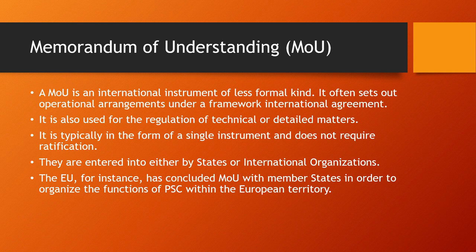The Paris MOU led to the formation of port state control within European territory. What that means is that some countries get together and agree that they don't need to inspect the ship in every European port. One country can inspect the ship and then pass on the findings to the rest of the MOU members. Resources and workload are shared. If a ship performs poorly in one port and sails to another European country, the inspecting country passes on that information, and the next port state control will be waiting to inspect that ship.